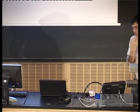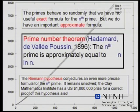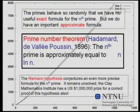We believe in many ways that the primes behave randomly. One piece of evidence for this is that we have no good formula for the nth prime. The nth square number is n squared, and we have exact formulas for many other things, but we don't have a good exact formula for the nth prime.